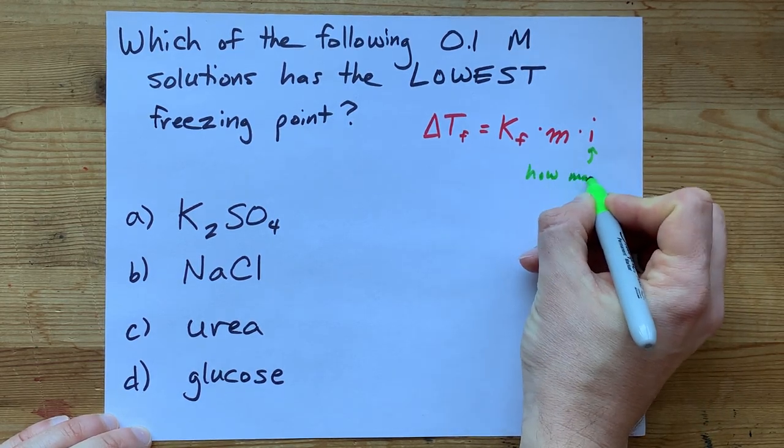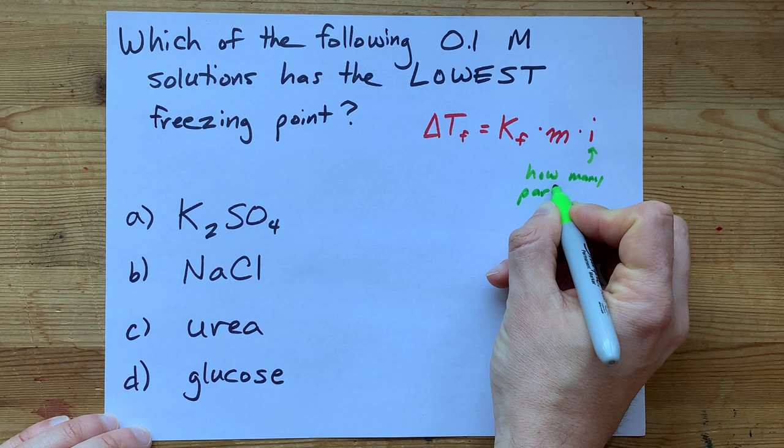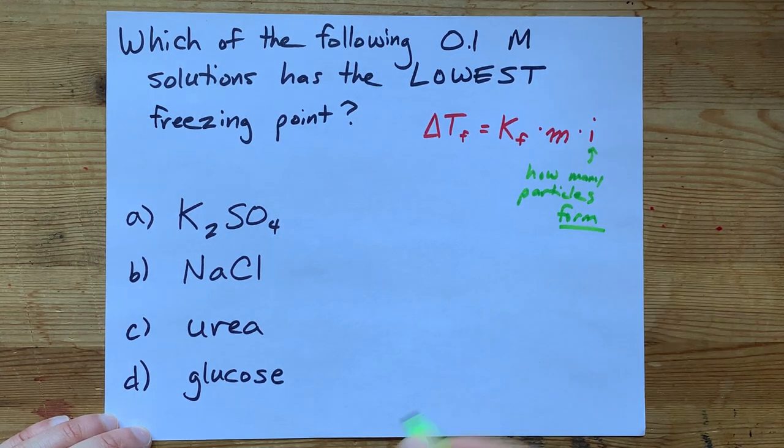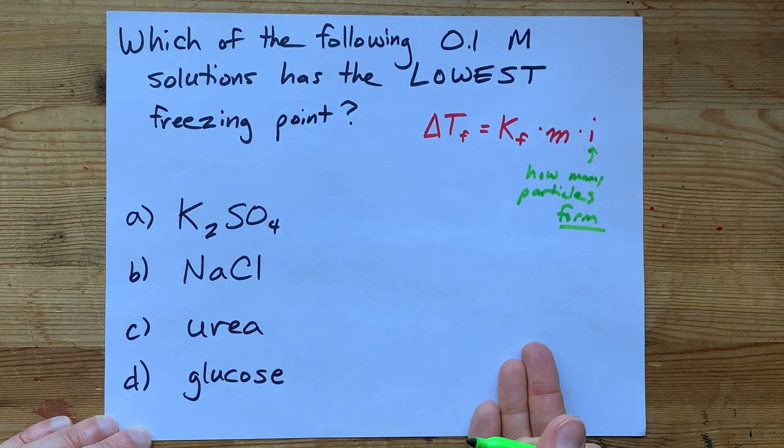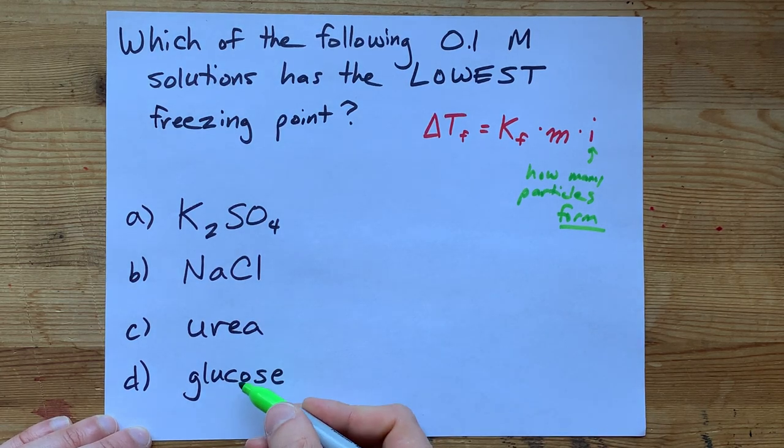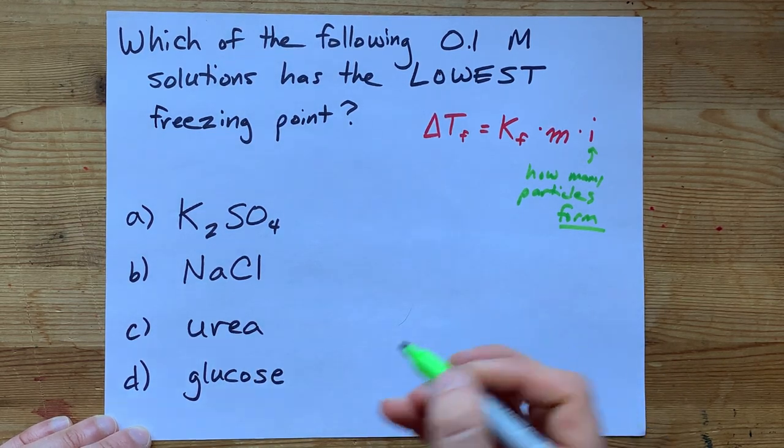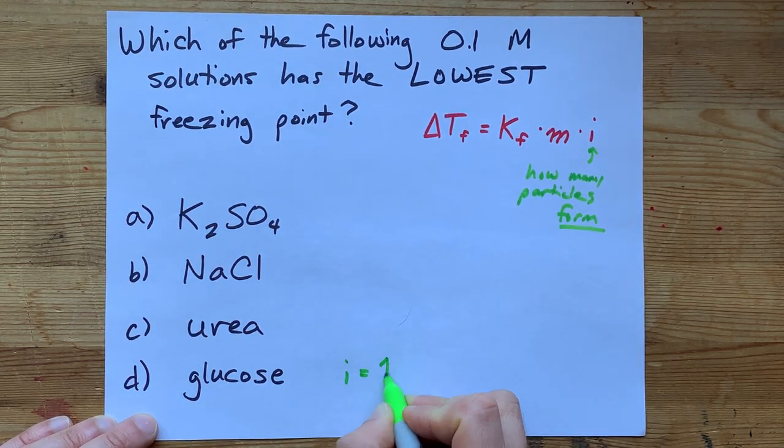That is how many particles are actually formed when you dissolve each of these into water. Glucose is a molecular compound. When it dissolves in water, it stays whole. So that means it has an i equals 1.